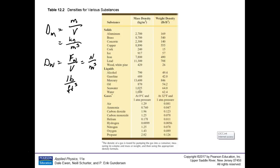Getting down to the liquids: alcohol is 0.79 grams per cubic centimeter or 790 kilograms per cubic meter. Gasoline is even lighter. Mercury — look at that — is one of the few metals, arguably the only metal, that is a liquid at normal temperatures and pressure. It's really bizarre how dense it is. Even lead is less dense than mercury, so if you had a pool of mercury and dropped a lead ball in, the lead would float. Oil is more dense than gasoline but still less dense than water. Sea water is just a little bit denser than pure water.